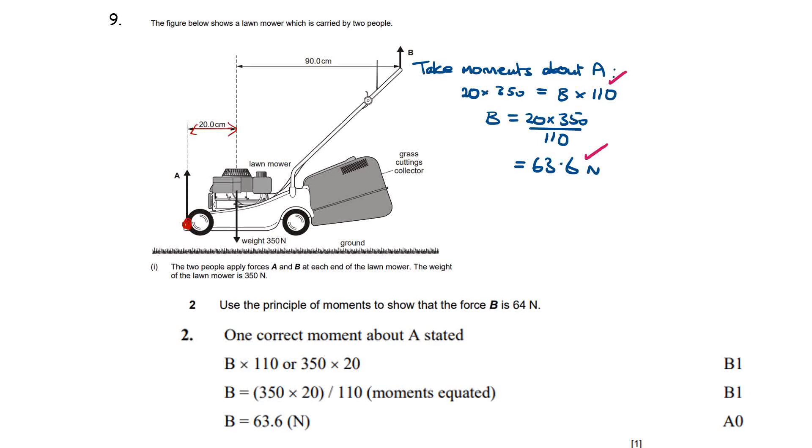And that's going to be equal to the anti-clockwise moment which is the force B multiplied by the perpendicular distance to the pivot which is going to be 110 centimeters. So we've got 20 times 350 for the clockwise is equal to B times 110 for the anti-clockwise moments, and then solving that for B we get B equals 63.6 newtons.